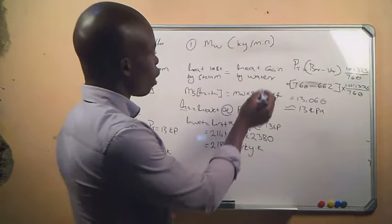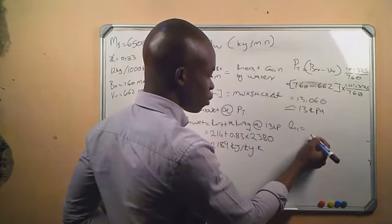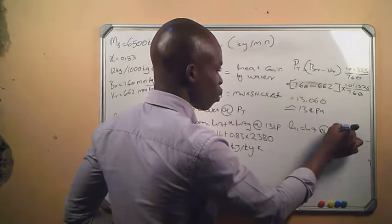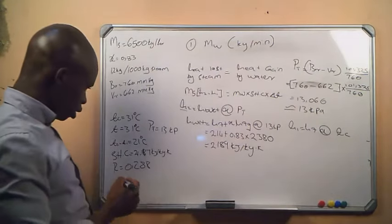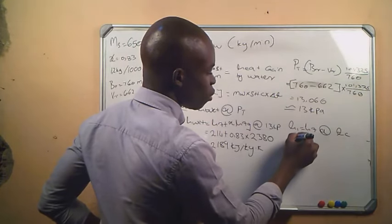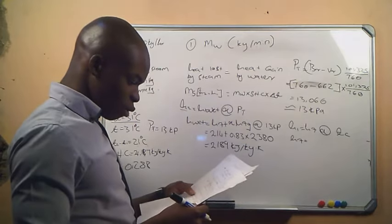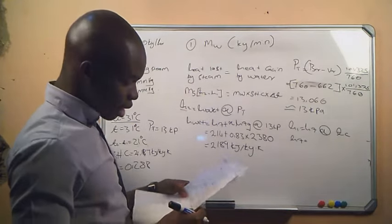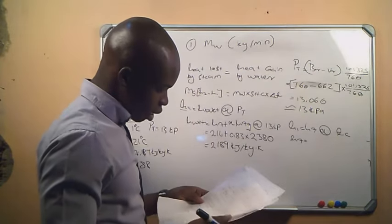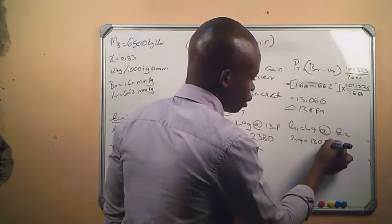We are now looking for h1. We know that h1 equals hf at the condensate temperature, which is 31 degrees Celsius. We go to the steam table, look for 31 degrees, and extract the corresponding hf value. I got hf as 130 kJ/kg.